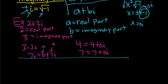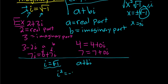To recap: i equals the square root of negative 1, called the imaginary unit. A complex number can be written as a plus bi. Something important: if you square i, you get i squared equals negative 1, because when you square the square root, it goes away.